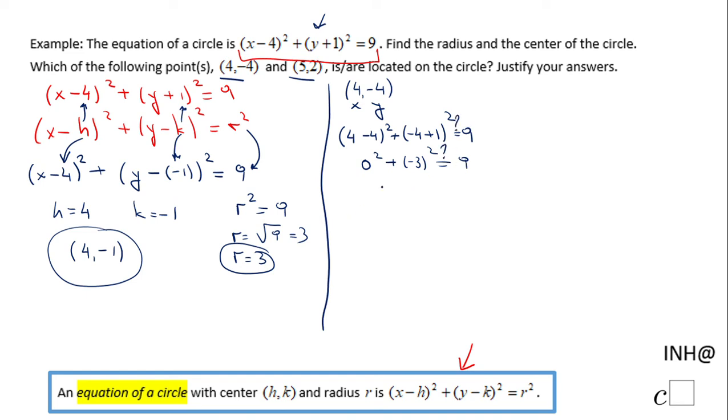And then 0 square is 0 plus negative 3 square is positive 9 and that equals 9. So this is a good statement. So this point is on the circle.